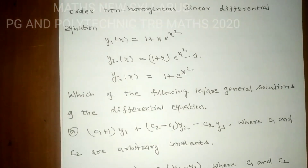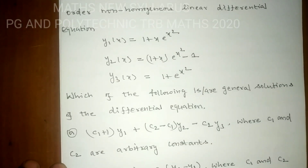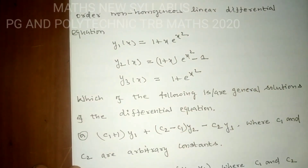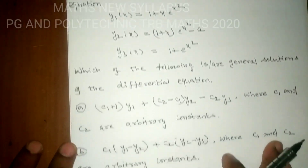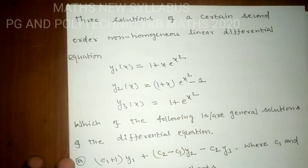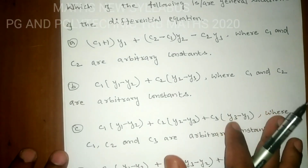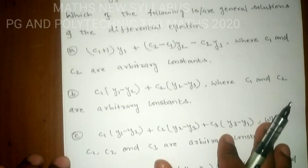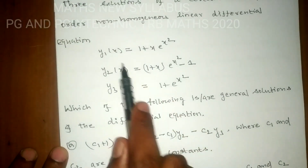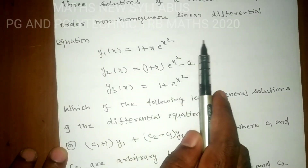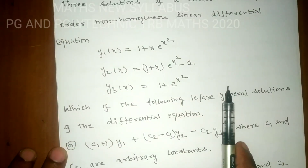For a non-homogeneous linear differential equation, if we have three solutions, the general solution is formed from linear combinations of those solutions. Suppose y1, y2, y3 are the three solutions of the second-order non-homogeneous linear differential equation.